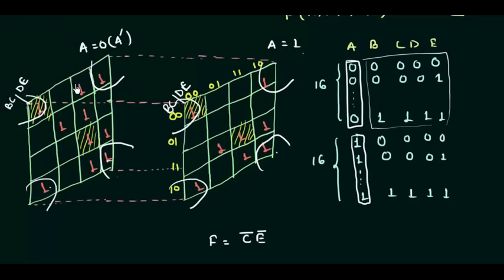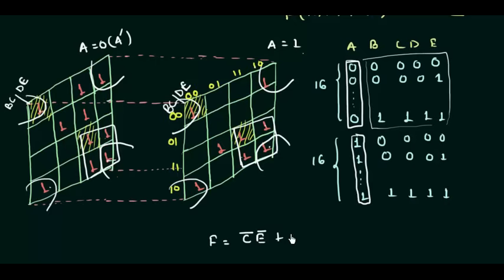Now we do the combination of the other group which involves 8 ones. I can group these 4 ones from the first map and these 4 ones from the second map — combining 8 ones in total. When we combine 8 cells, 3 variables are eliminated. The first variable that goes off is A because A is changing from 0 to 1. Then b and c: b is not changing and it's 1, but c is changing from 1 to 0, so c is neglected. Similarly for d and e: d is not changing and it's 1, but e is changing from 1 to 0, so e is neglected. This group gives us just b · d.